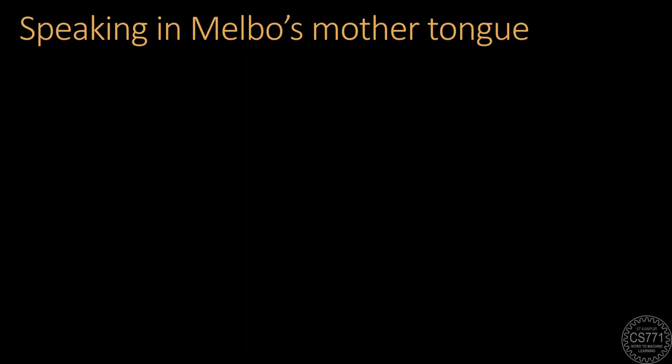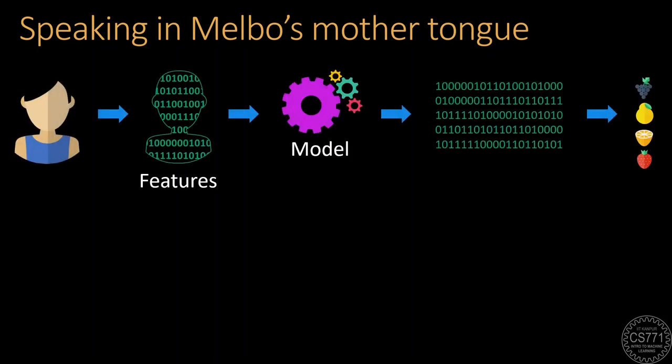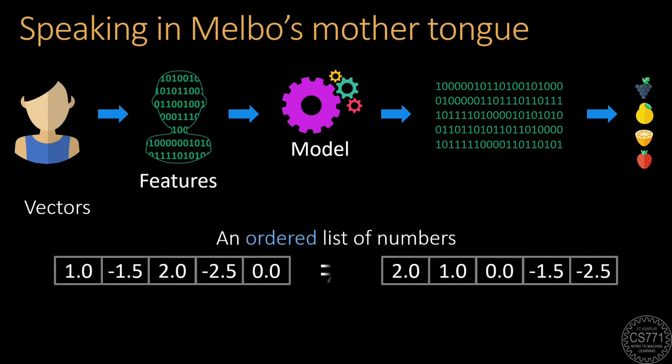In our previous discussion, we saw that machine learning models need to be provided information about data points in the form of features. These are usually ordered lists of numbers called vectors.